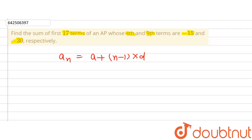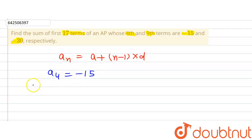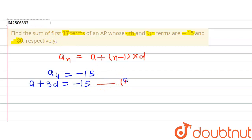We are given that the 4th term of the AP is minus 15. Putting n = 4 into the formula: A + (4 − 1)D = A + 3D = −15. This is our first equation.